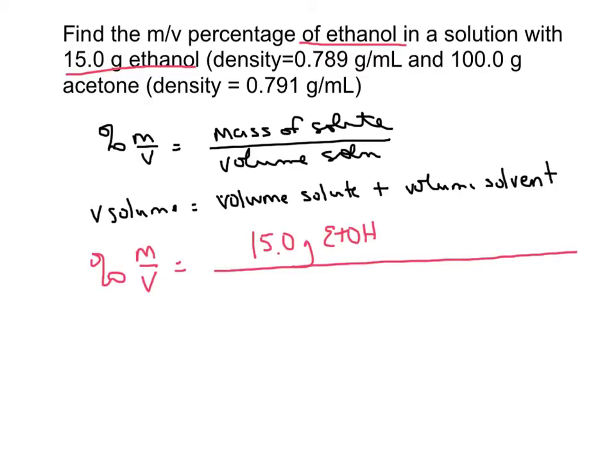On the bottom I've got a little bit more to do because I've got to find the volume of the ethanol. I know the mass is 15.0 grams, and I can use its density, 0.789 grams per milliliter.